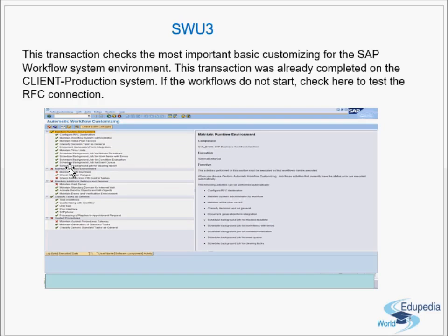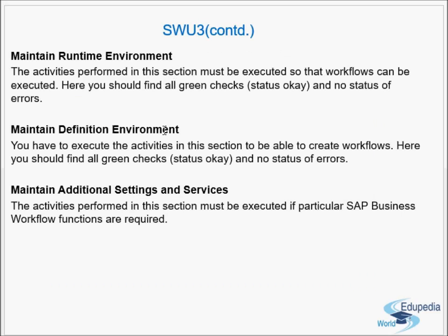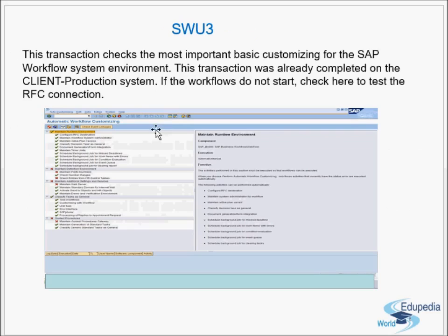Under Maintain Runtime Environment, the activities performed in this section must be executed so that workflows can be executed. You should find all green check statuses and no errors here. All the steps under Maintain Runtime Environment help in the processing of the workflow, so make sure all these steps are configured and you have all green ticks.